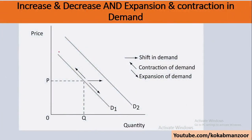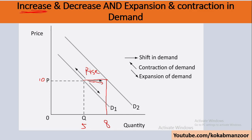Looking at the graph: this is the first demand curve D1. Suppose the price is 10 and you purchase 5 units. Now the price remains the same but you increase your consumption to 8 units. This increase from the first point to the second is not because of the price, but because your income went up or the price of a related good changed. This is called a rise in demand — or increase in demand.